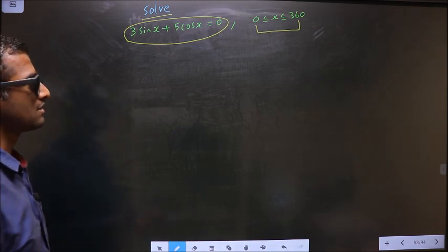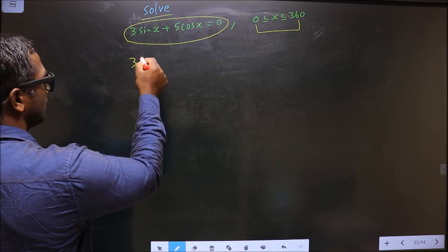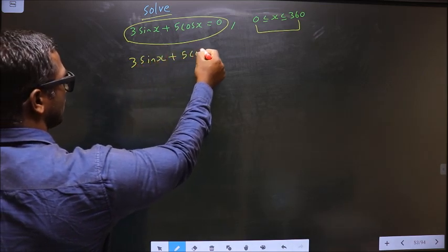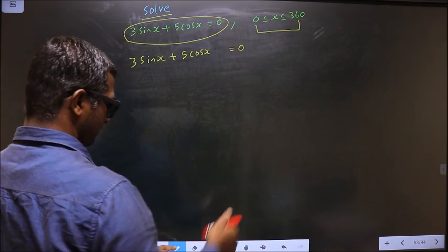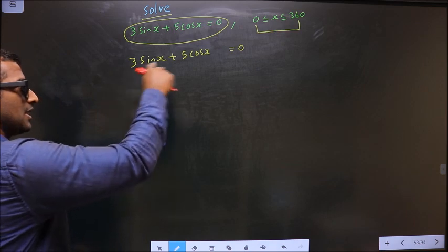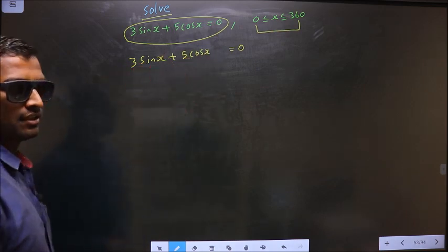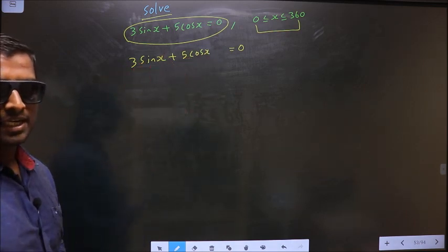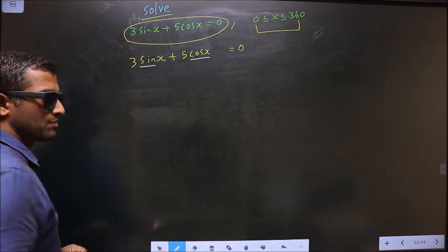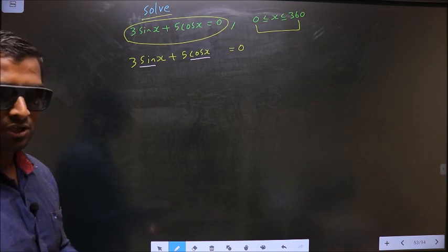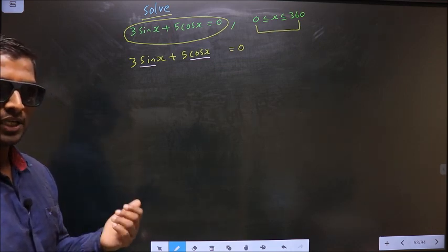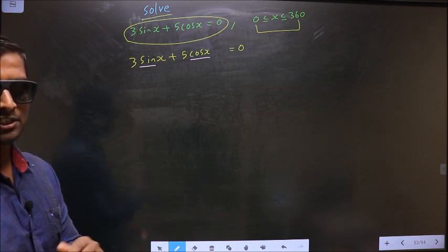First, the given equation is 3 sin x plus 5 cos x equal to 0. In this trigonometric equation, there are two trigonometric ratios present: sin and cos. But for us to solve, there should be only one trigonometric ratio. How do I convert this to one trigonometric ratio? See here.